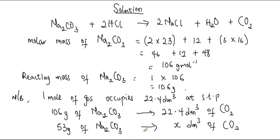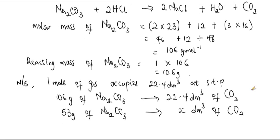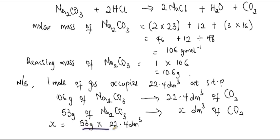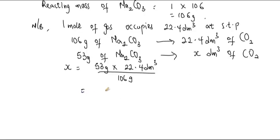Solving for x by cross-multiplying: x equals 53 grams multiplied by 22.4 dm³, divided by 106 grams. For the numerator: 53 × 22.4 = 1187.2. Dividing by the denominator 106, we get x = 11.2 dm³.